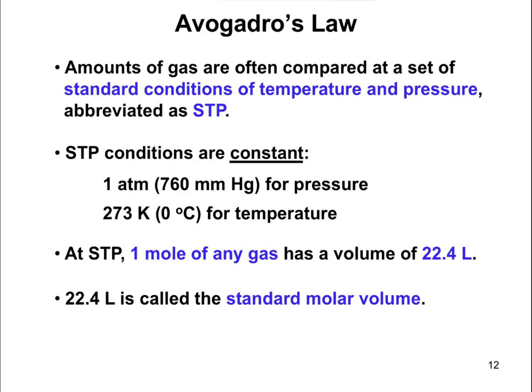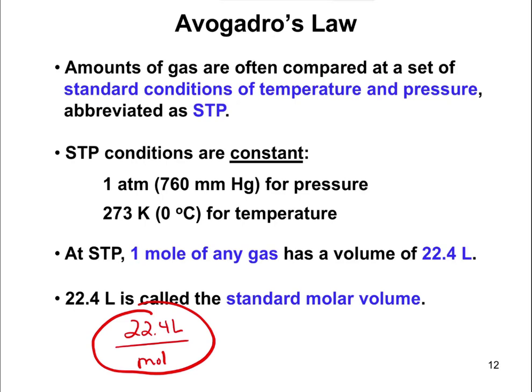Avogadro's Law is most frequently used to compare gases to each other. Gases are compared at standard conditions of temperature and pressure — one atmosphere (or 760 millimeters of mercury) and zero degrees Celsius (273 Kelvin). What you need to know is that at STP, one mole of any gas has a volume of 22.4 liters, called the standard molar volume — 22.4 liters per mole. This is only true at standard temperature and pressure.